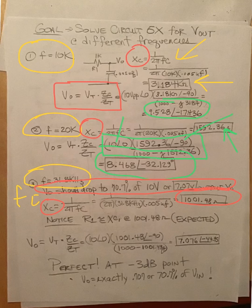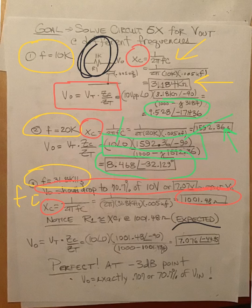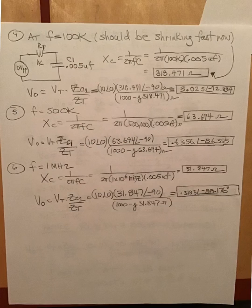I run the computation, and I notice that I get 7.076 at minus 44.95 degrees. Perfect, exactly what I was hoping for. At the minus 3 dB point, we have 70.7% of our 10 volts delivered to the output.